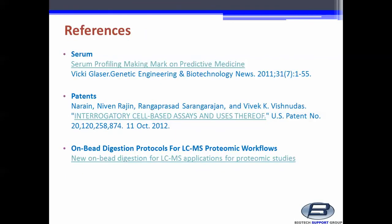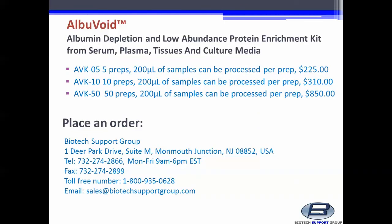These are additional references on Albuvoid published in Genetic Engineering and Biotechnology News, and references published at posters and in patents. For more information, please visit biotechsupportgroup.com. To order Albuvoid, please visit biotechsupportgroup.com. Albuvoid product numbers are AVK-05, AVK-10, and AVK-50.